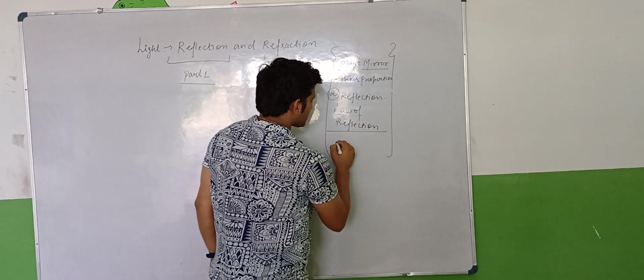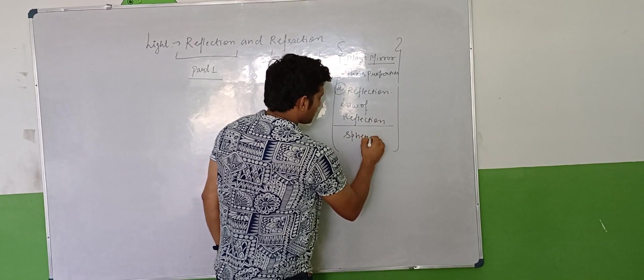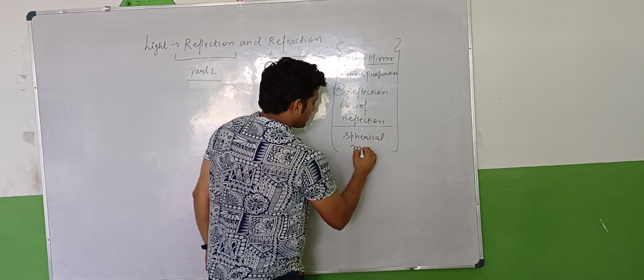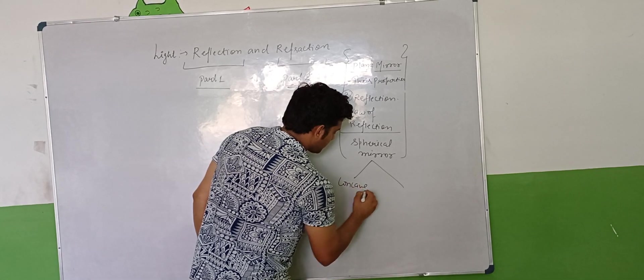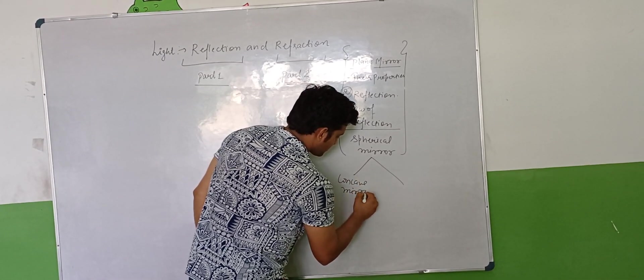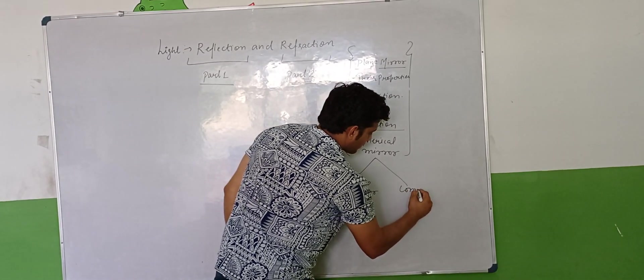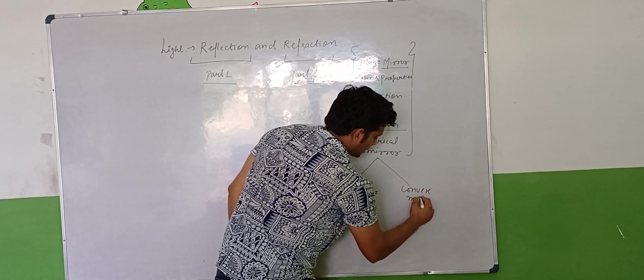After this, we are studying about Spherical Mirror. They are two parts: Concave Mirror and Convex Mirror.